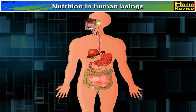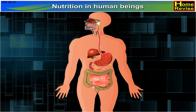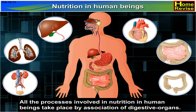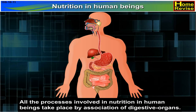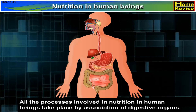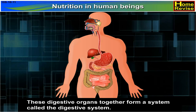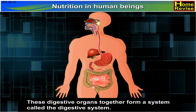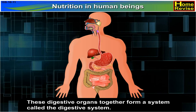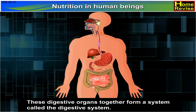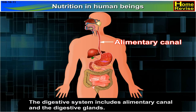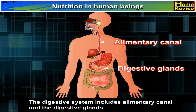Nutrition in human beings. All the processes involved in nutrition in human beings take place by association of digestive organs. These digestive organs together form a system called the digestive system. The digestive system includes the alimentary canal and the digestive glands.